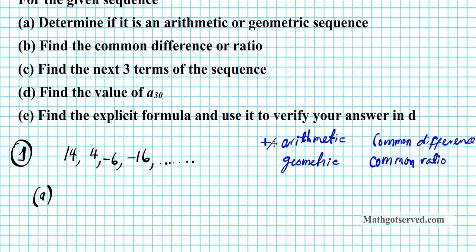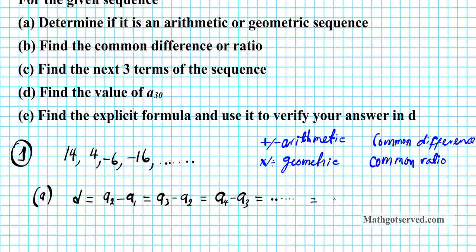To determine if this is arithmetic or geometric, we're going to check if we have a common difference or a common ratio. We'll start with the arithmetic test first. For an arithmetic sequence, the common difference D has to equal A2 minus A1, and also A3 minus A2, and A4 minus A3 — that pattern must continue. A term minus the term before it gives the common difference, and you must get the same number every single time.